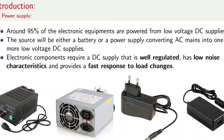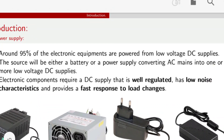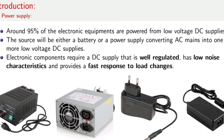The DC power supply required for 95% of electronic equipment is powered from low voltage DC supply — high voltage DC supply is not required. Expensive equipment like laptops and mobiles are powered either from a battery or by converting AC to DC into low voltage DC supplies. Electronic components require a DC supply that is well regulated, has low noise, no ripples, and fast response to load changes. A laptop charger converts AC into DC regulated power supply. For mobiles, it converts directly from the AC source — 230 volts to 5 volts DC.